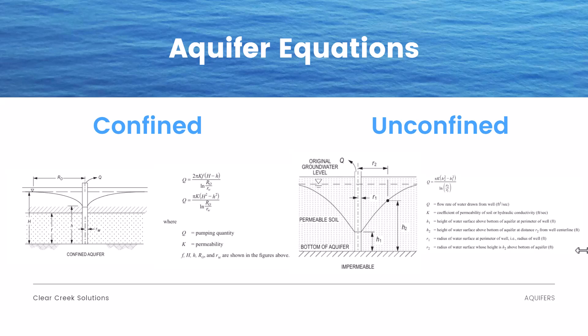These aquifer types have different equations governing how much pumping quantity or flow rate of water drawn comes from them. For a confined aquifer: Q = 2πkf(H - h) / ln(r0 / rw). For an unconfined aquifer, which calculates the flow rate in cubic feet per second: Q = πk(h2² - h1²) / ln(r2 / r1), where k is the coefficient of permeability, h1 is the height of the water surface above the bottom of the aquifer at the perimeter of the well, h2 is that height at distance r2 from the well centerline, r1 is the radius of the well itself, and r2 is the radius of the water surface whose height is h2 above the bottom of the aquifer.